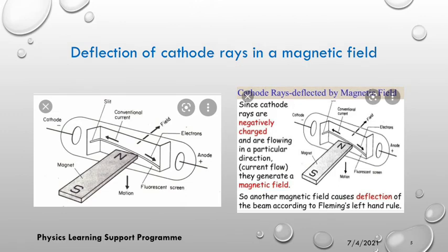On the other hand, if placed in a magnetic field, cathode rays — being negatively charged and flowing in a particular direction — generate a magnetic field. Another magnetic field will then cause a deflection of the beam according to Fleming's left-hand rule. There's a video on this channel that has talked about Fleming's left-hand rule already. Cathode rays are also deflected towards the north side of the magnetic field and cause a downward motion in a magnetic field.